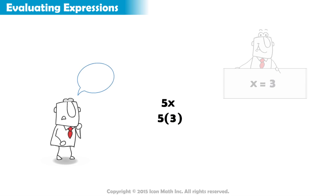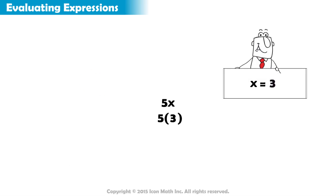Be careful, the answer is not 53. We substitute with parentheses to remind us to multiply. 5 times 3 equals 15.